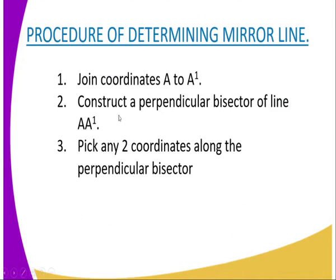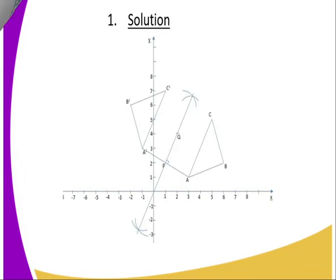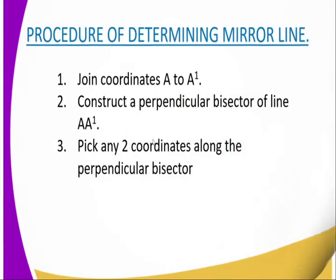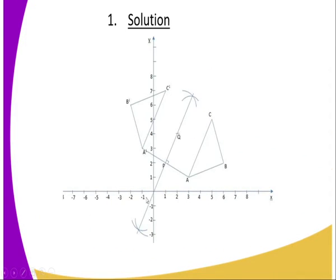Next, you are supposed to join coordinate A to A' — that is, one coordinate of the object to the corresponding coordinate of the image — with a straight line. After that, you construct the perpendicular bisector of line AA'. The perpendicular bisector in this case is represented by line PQ.